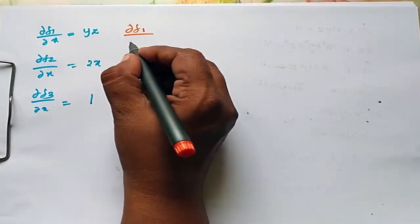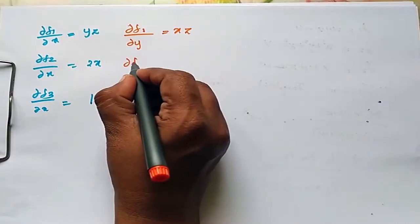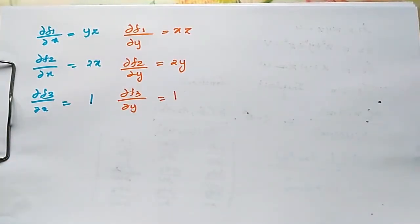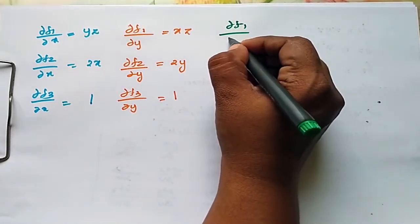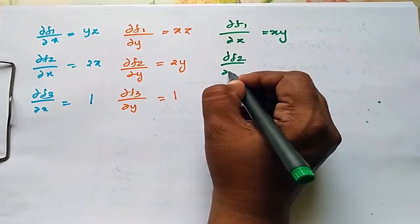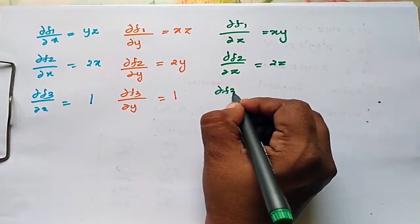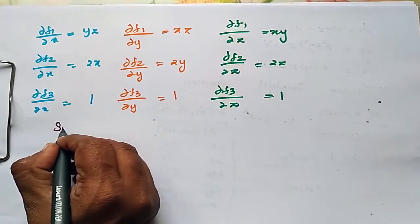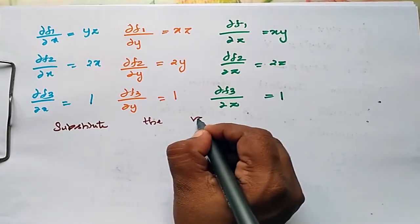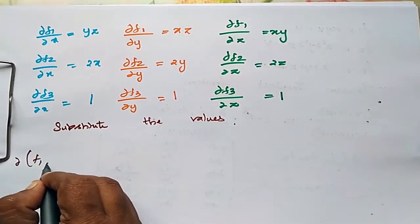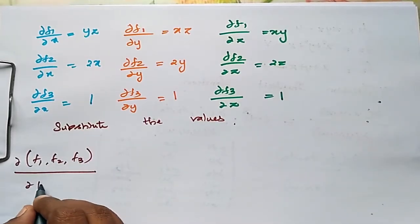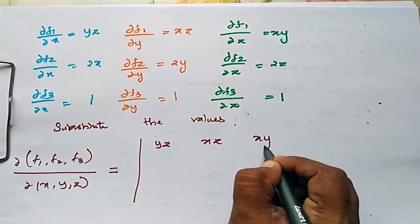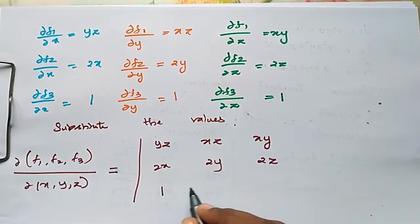∂f1/∂y = x·z, ∂f2/∂y = 2y, ∂f3/∂y = 1. Next, ∂f1/∂z = x·y, ∂f2/∂z = 2z, ∂f3/∂z = 1. So substituting the values, ∂(f1, f2, f3) / ∂(x, y, z) gives a determinant with rows: [y·z, x·z, x·y], [2x, 2y, 2z], [1, 1, 1].